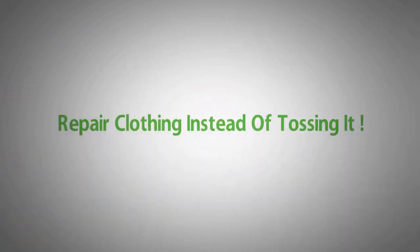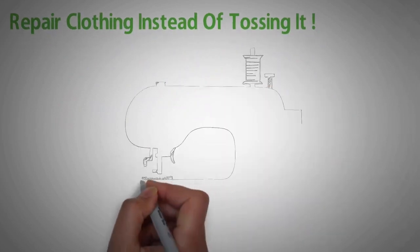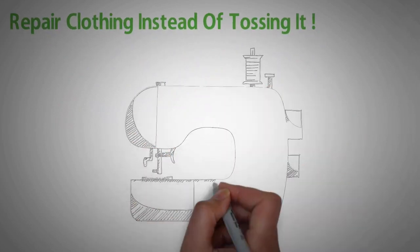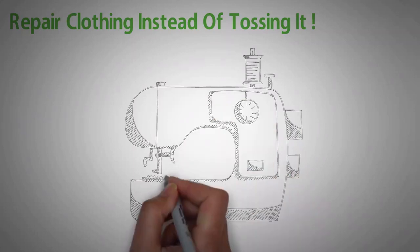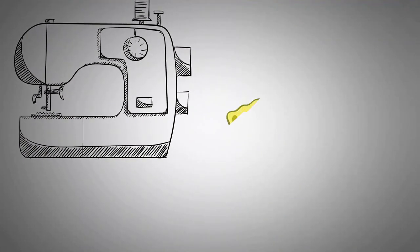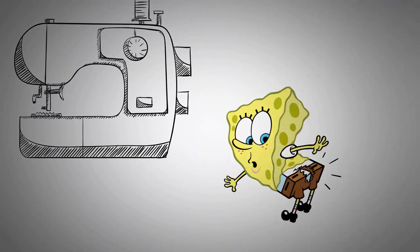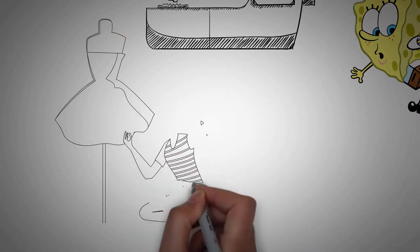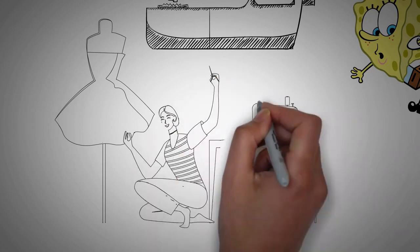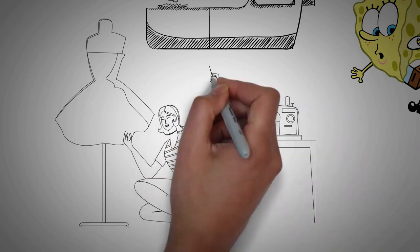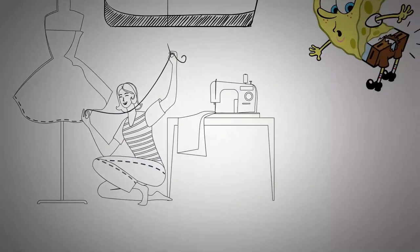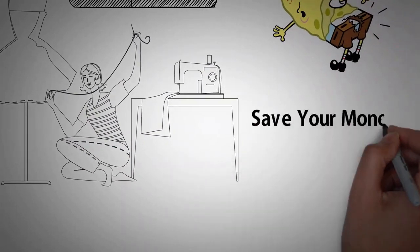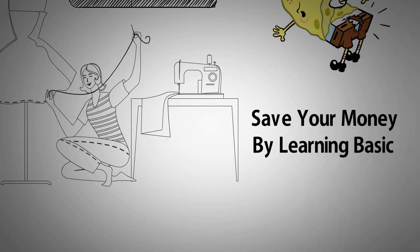Repair clothing instead of tossing it. Don't toss out a shirt because of a broken button, sew on a new one with some closely matched thread. Don't toss out pants because of a hole in them, put in a patch of some sort and save them for times when you're working around the house. Most basic sewing jobs can be completed by anyone, and a little bit of practice goes a long way. Learning basic sewing skills is a great way to save some money and extend the life of your clothing.